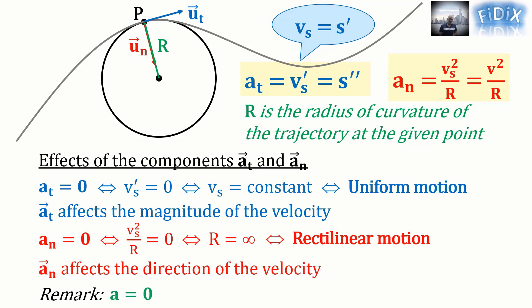Note that if a = 0, then a_t and a_n are both equal to 0, which means that the motion is uniform and rectilinear.